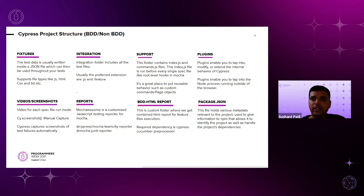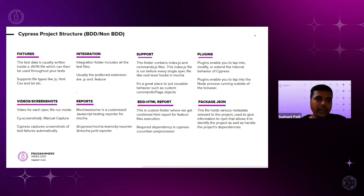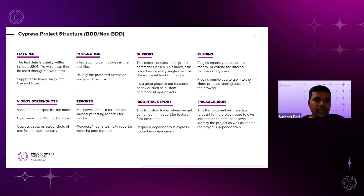The plugins folder enables you to tap into, modify, or extend the internal behavior of Cypress. Plugins run outside the browser, whereas Cypress runs inside the browser. Node.js treats these plugins as separate threads, and they run before starting every spec file. Any NPM-supported plugins available in Cypress can be used by extending them. For videos and screenshots: a video is generated for each spec file when in run mode. Screenshots can be captured manually using the screenshot method, and Cypress also captures screenshots on failure automatically. These defaults can be overridden in the configuration file.